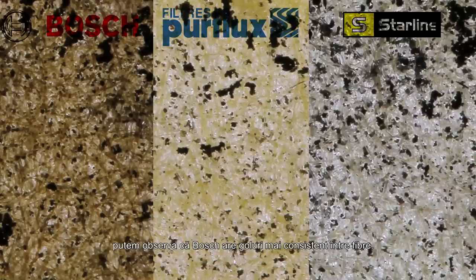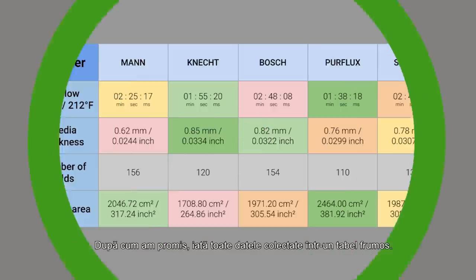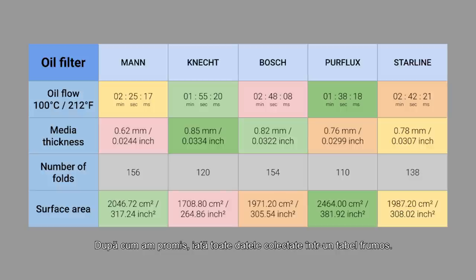Now for a side-by-side comparison of these three filters at the same magnification. We can see that Bosch has a more consistent gap between the fibers. Now let's add the previous tested filters to this side-by-side comparison. You can clearly see that Bosch and Knecht have the thickest media and Mann having the thinnest. As promised, here are all the data collected in a very nice table. The best values are in green and worst are in red.